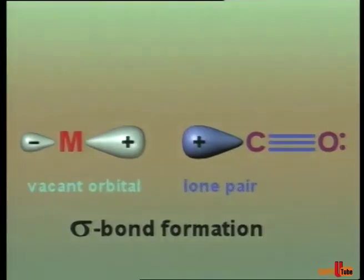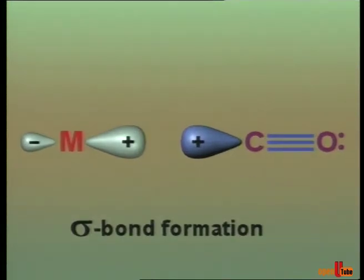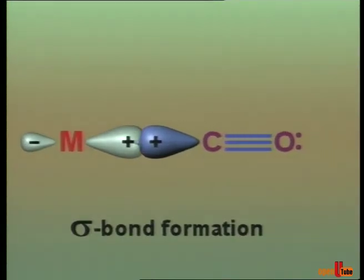Let's look at how a metal ligand bond is formed. Some ligands can donate a pair of electrons or a lone pair to a vacant orbital of a transition metal center. The resulting bond is called a sigma bond.